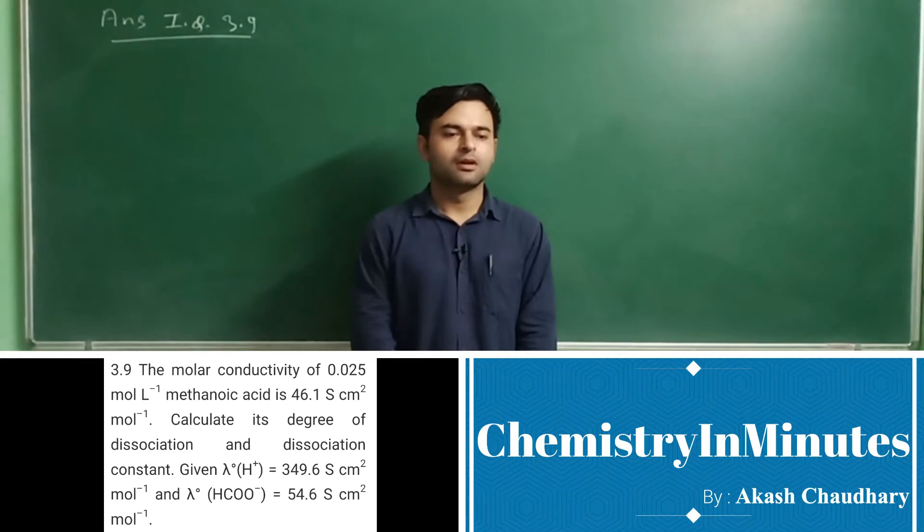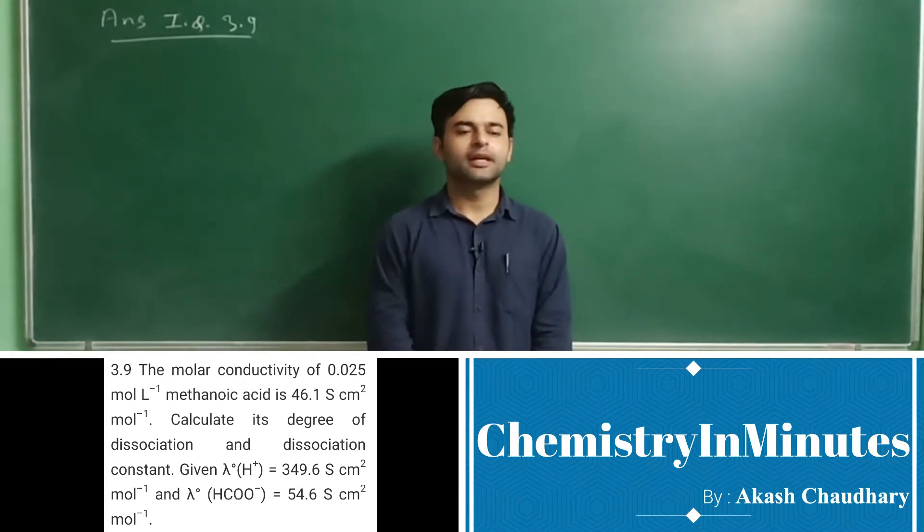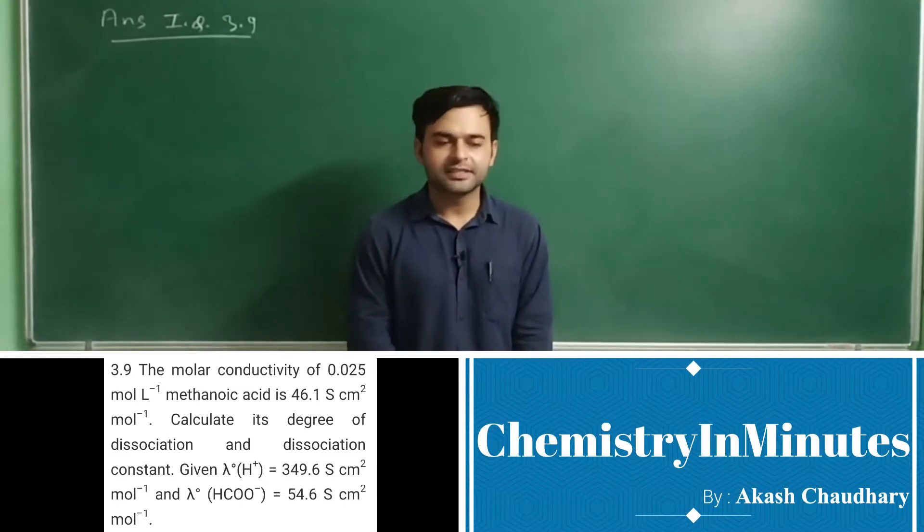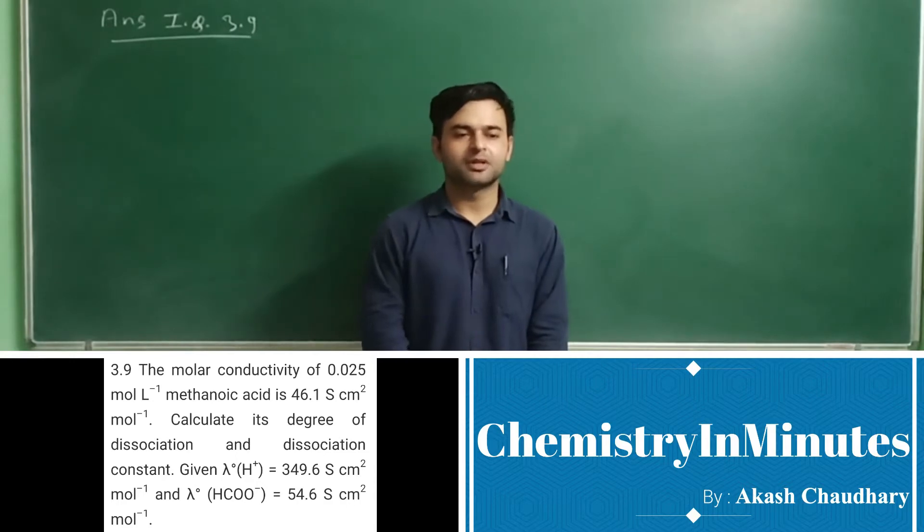The question is: the molar conductivity of 0.025 mole per liter methanoic acid is 46.1 Siemens centimeter square per mole. Calculate its degree of dissociation and dissociation constant given lambda naught H+ equals 349.6 Siemens centimeter square per mole and lambda naught HCOO- is 54.6 Siemens centimeter square per mole.